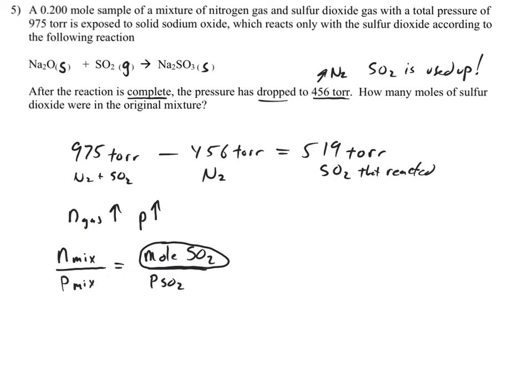We had an original 0.200 moles of this mixture of gas with an original pressure of 975 torr. We don't need to change that to atmospheres because it's a proportion and everything's in torr. That's going to equal the moles of SO2 divided by the pressure of SO2, which we just calculated to be 519 torr.